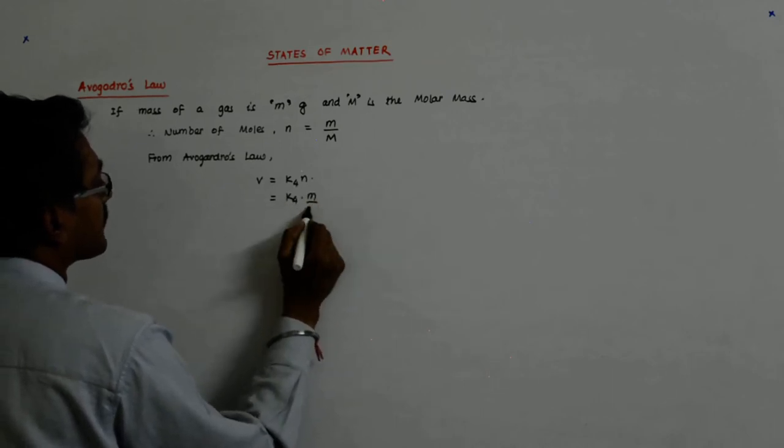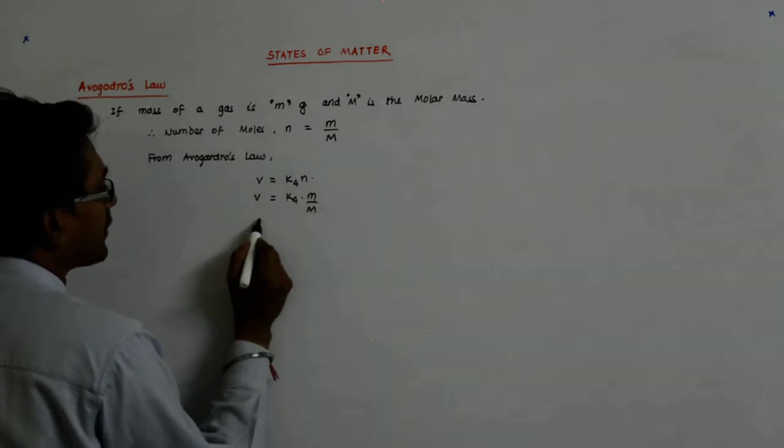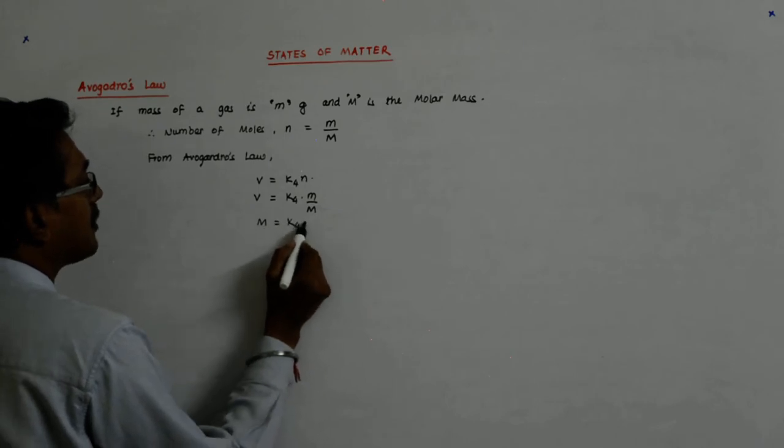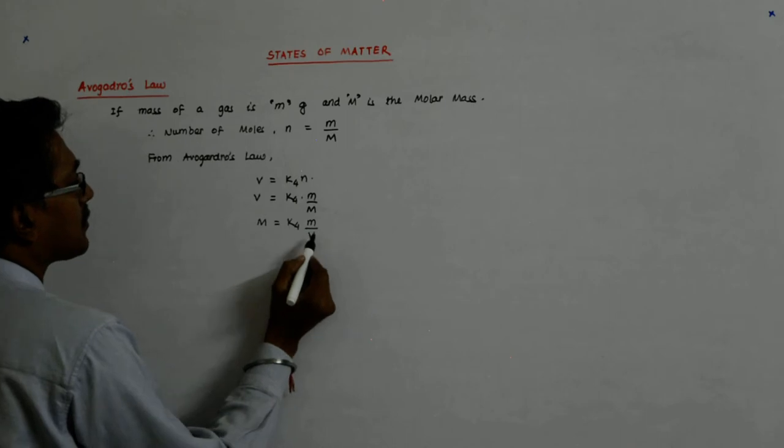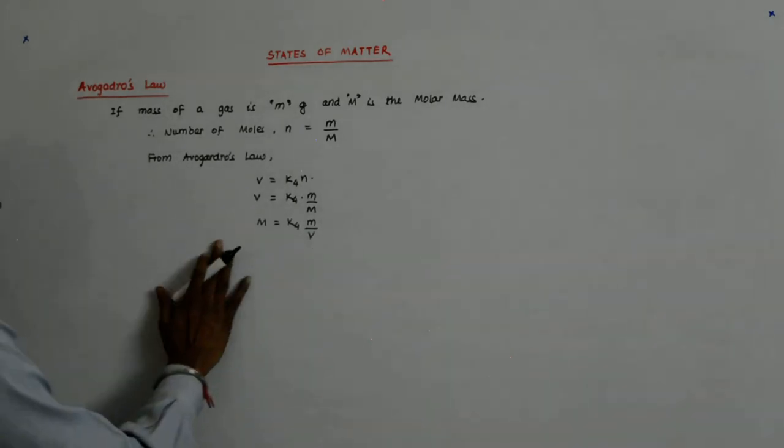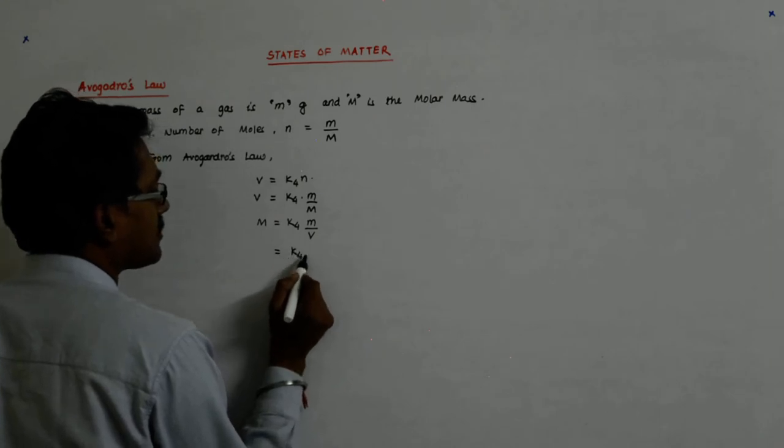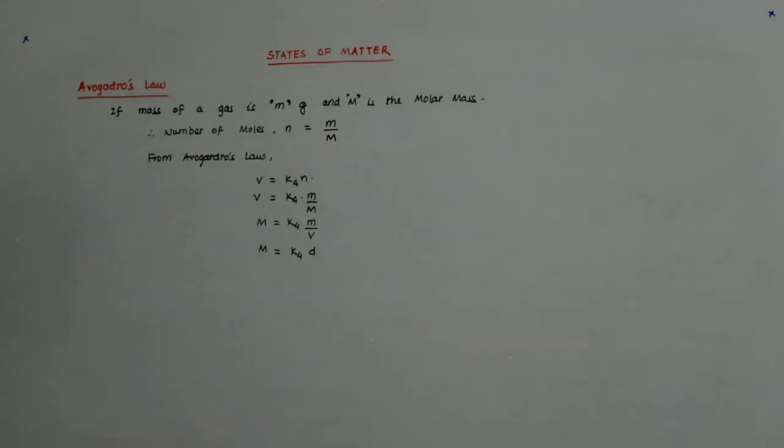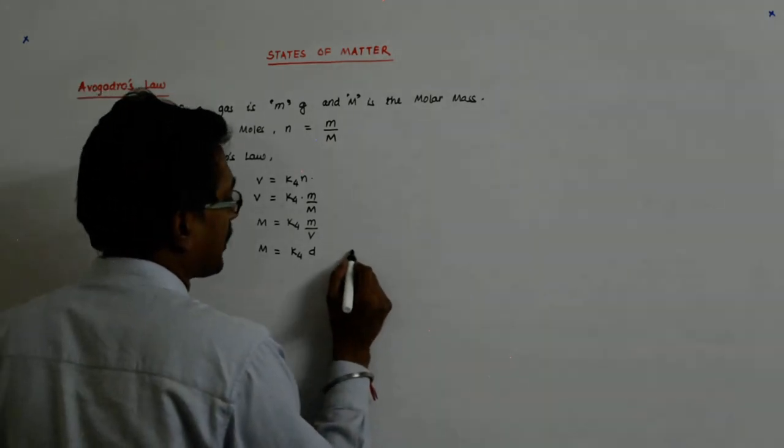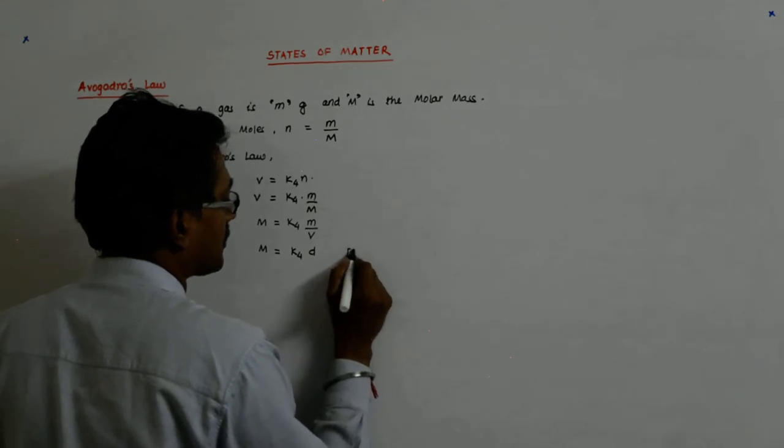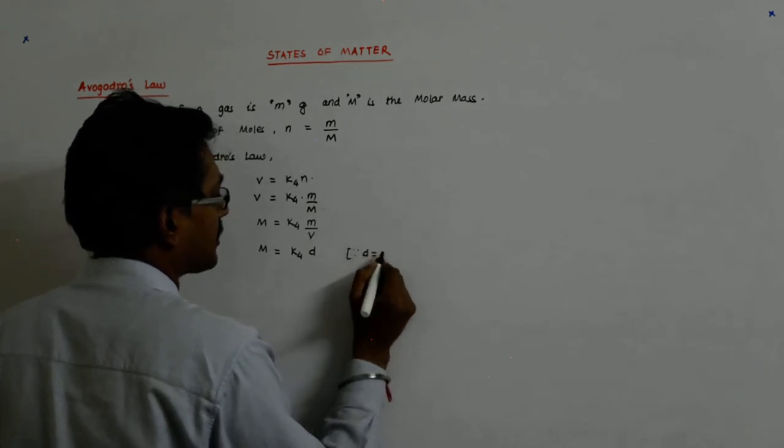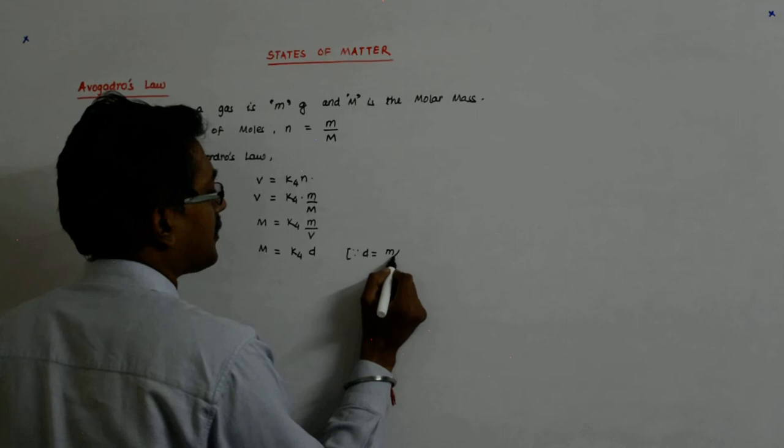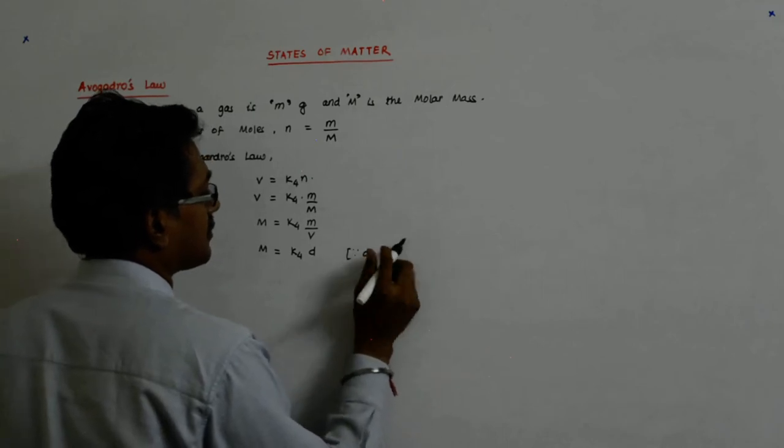m upon capital M, so m is equal to k4 M upon v. Now mass upon volume is nothing but density.